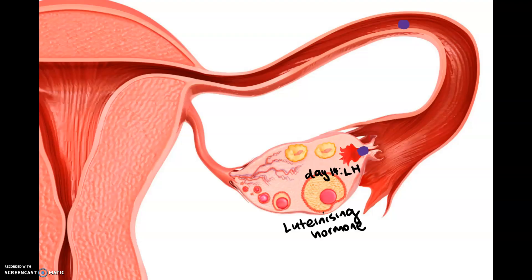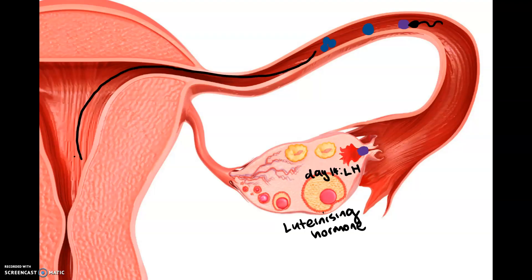Now we're going to explore case one, where fertilization does occur. Fertilization is the process of the spermatozoa meeting the oocyte, after which you form a zygote. The zygote then undergoes mitosis — it replicates — and this mitotic process continues all throughout the passageway all the way until implantation.